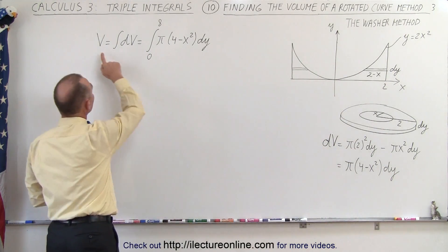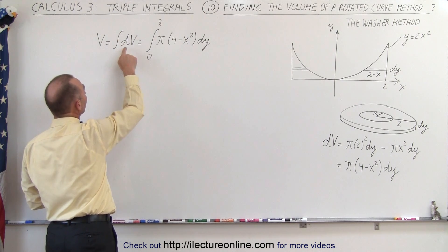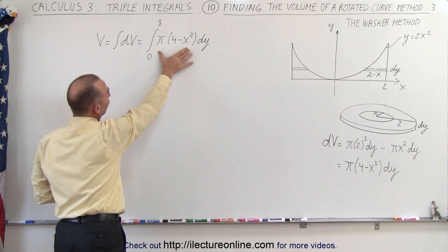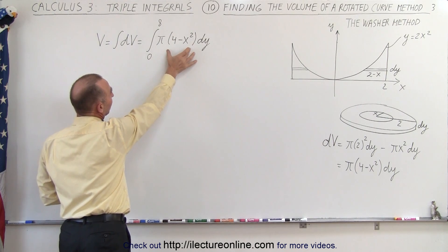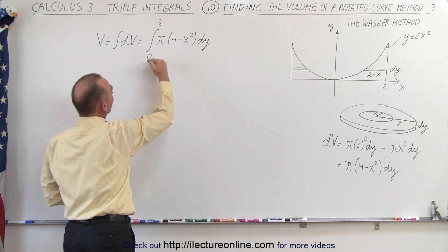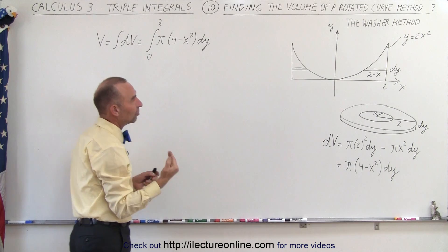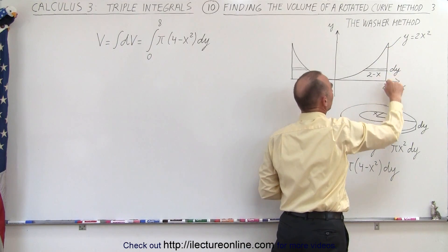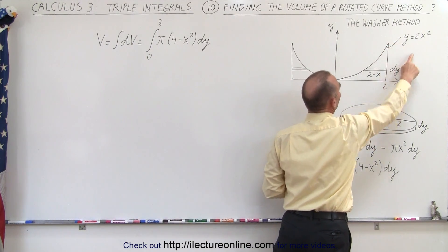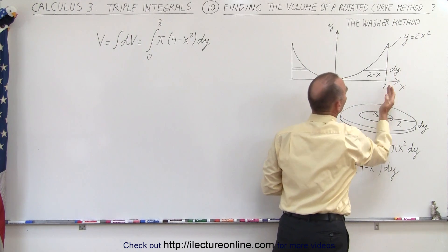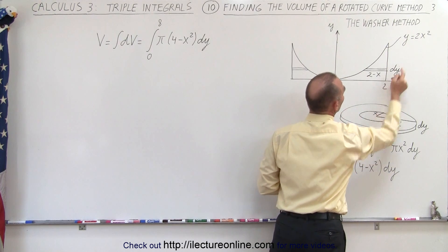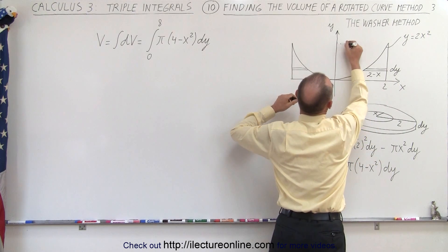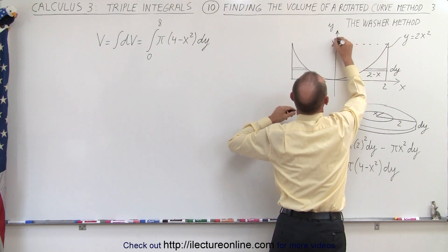When we integrate this, the volume will be the integral of dv, which is pi times (4 minus x squared) dy, evaluated from 0 to 8. We're integrating in the y direction, and since y equals 2x squared, when x equals 2, y equals 8. So this upper point gives us y equals 8.